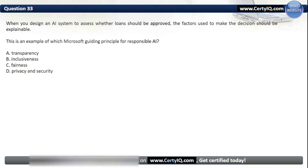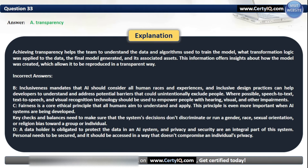Question 33. When you design an AI system to assess whether loans should be approved, the factors used to make the decision should be explainable. This is an example of which Microsoft guiding principle for Responsible AI? Options: A. Transparency, B. Inclusiveness, C. Fairness, or D. Privacy and Security. The correct option is A. Transparency. Achieving transparency helps the team understand the data and algorithms used to train the model, what transformation logic was applied, and the final model generated. This information offers insights about how the model was created, allowing it to be reproduced in a transparent way.